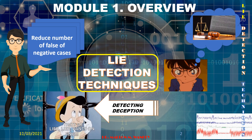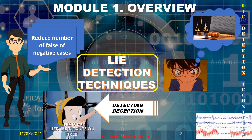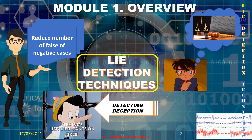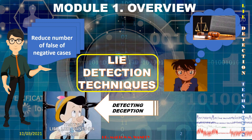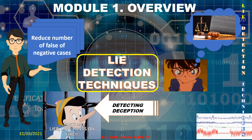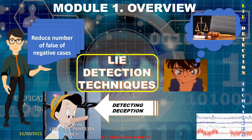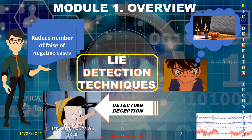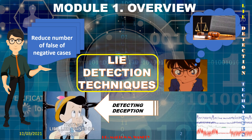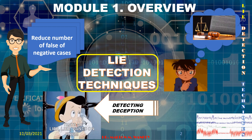The polygraph examination result may also be used for industries, especially when hiring applicants, to determine whether the applicant is an honest person. It can also be used when there are reported cases or anomalies in the office. We will discuss the accuracy of the polygraph later. For now, let us talk about what possible methods or techniques exist for detecting deception.